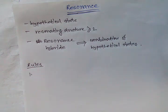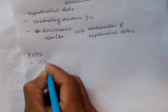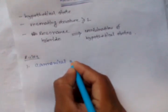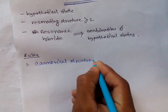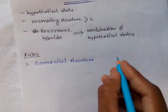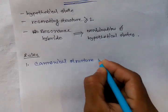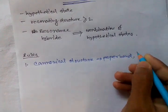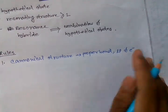There are some rules and regulations for resonance. Rule number one: all canonical structures must be written with proper bonds and lone pairs of electrons.